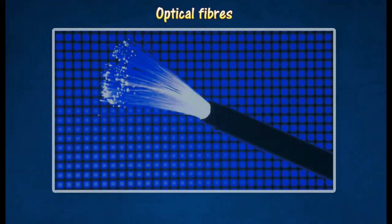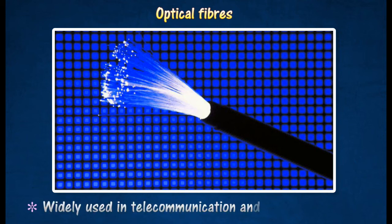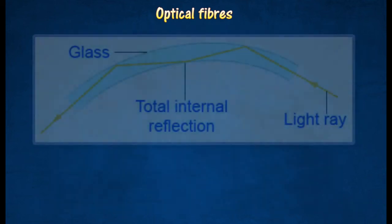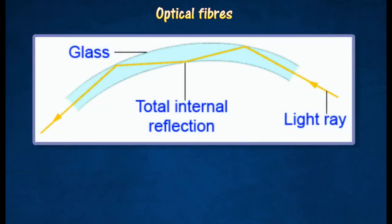Optical fibers come in thousands of fine strands. Light rays entering the fiber will undergo total internal reflection many times. They are used widely in telecommunication and medical equipment like endoscopes. Each single glass fiber is coated with a thin layer of another type of glass of lower refractive index.